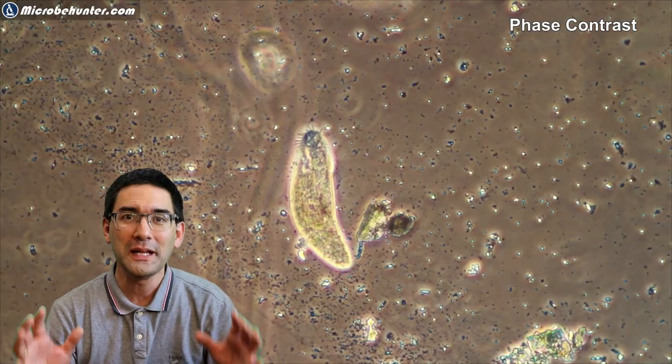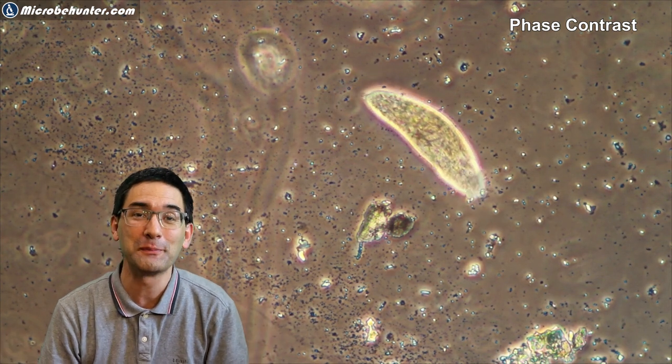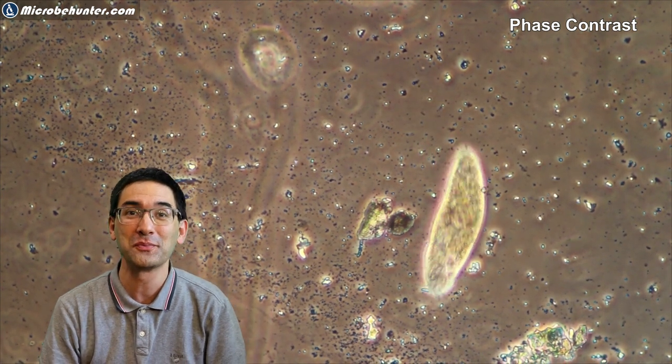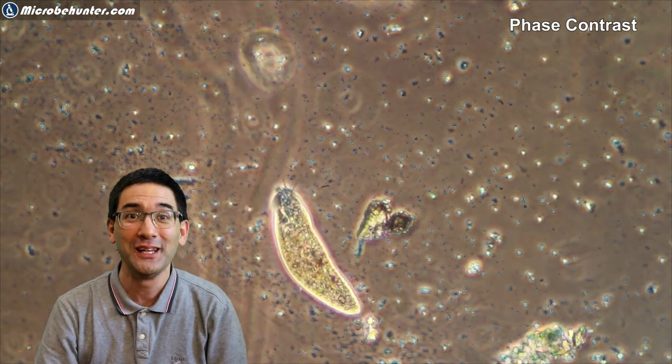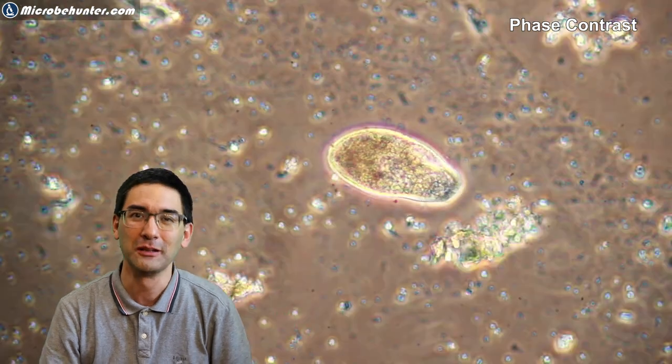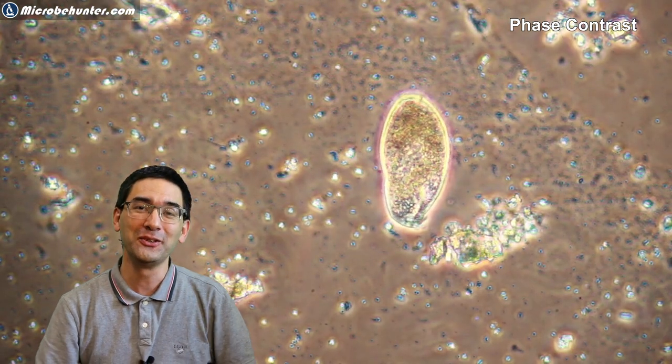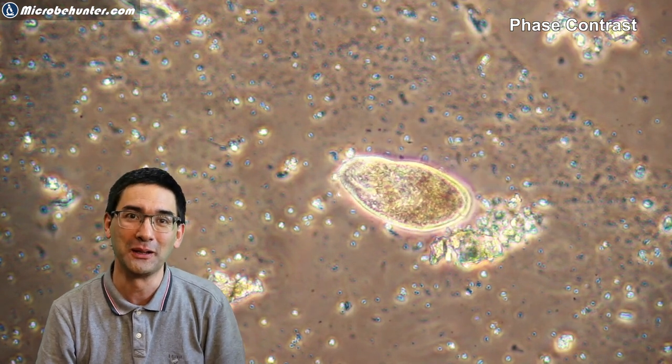In a moss sample you can not only find tardigrades but many other water organisms. For example, this here is a ciliate going around in a circle—it's only made of one cell. This here is a multicellular organism called a rotifer, almost the same size, maybe a little bit larger. And yet another ciliate. The biodiversity in a moss sample is quite large.